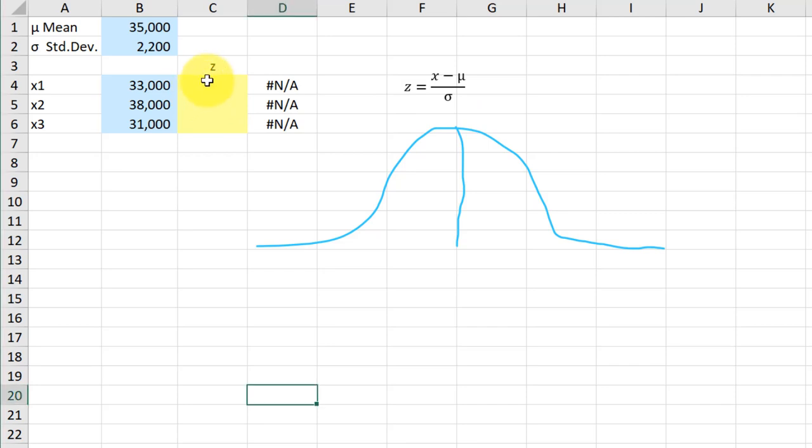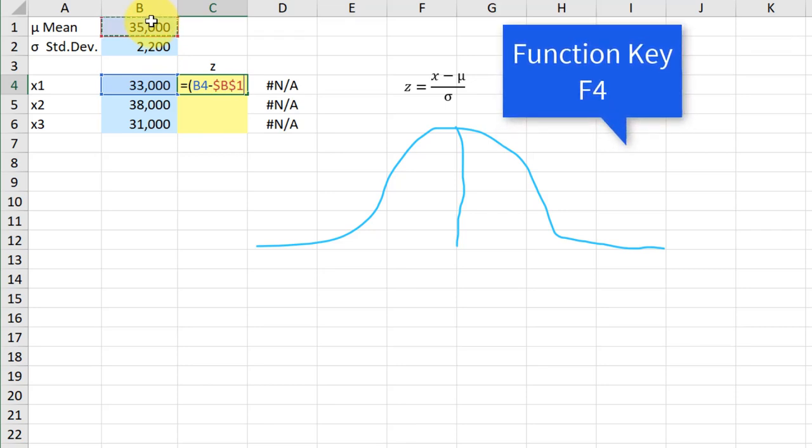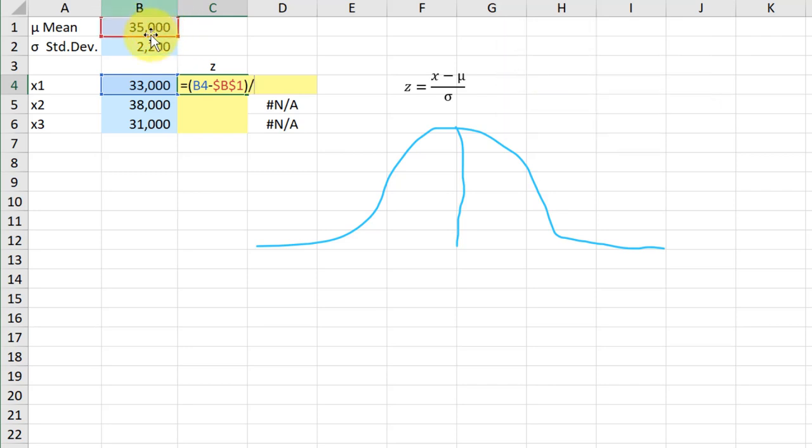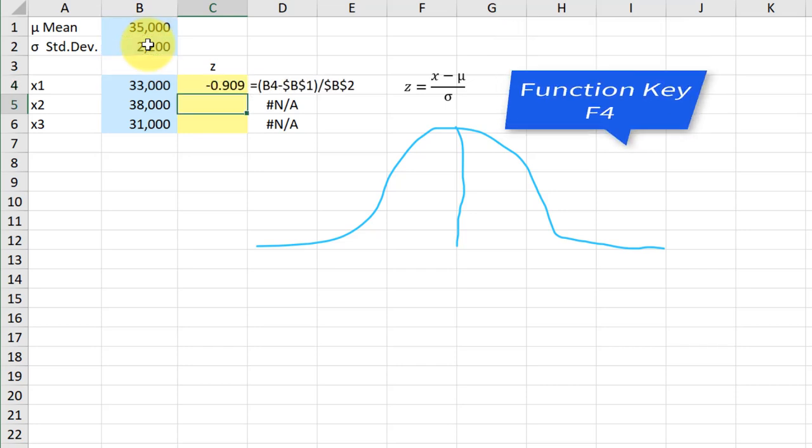We're going to do it this way. We're going to click in the cell, hit equal, and I'm going to put an opening parentheses because we've got to divide this whole equation up there. We're going to take the X value minus the mean, and then we're going to hit the function F4 key to lock that down and close it. Put the division by the standard deviation, and then we're going to hit F4 again to lock that down. And that gives us a Z score of minus 0.91.